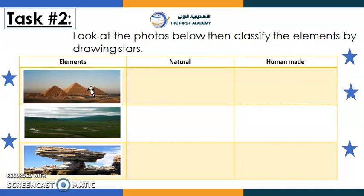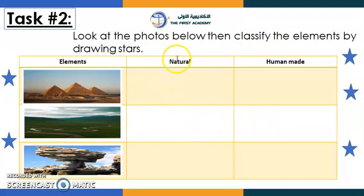So, is it natural or human made? Human made — well done! Now let's move to the second picture. Tell me what you can see. It's a valley — well done! So is it natural or human made? It's natural — well done! Let's move to the last one. What is it? A canyon. So is it natural or human made? It's natural — it's made by Allah subhanahu wa ta'ala.